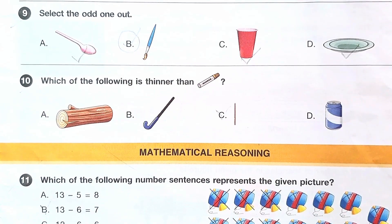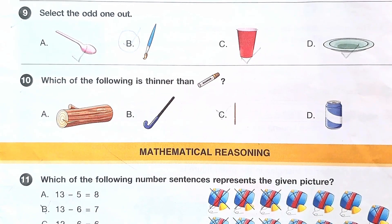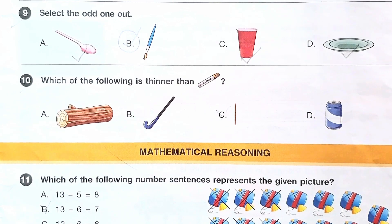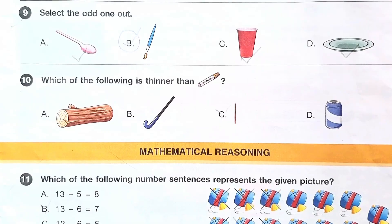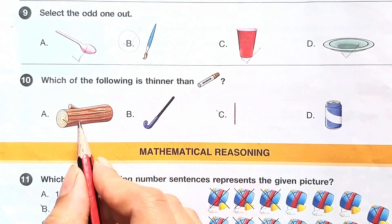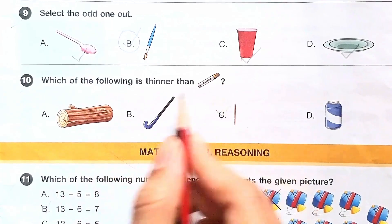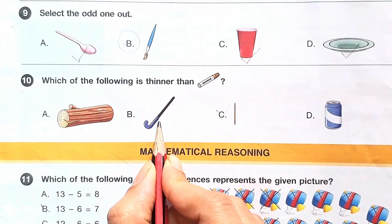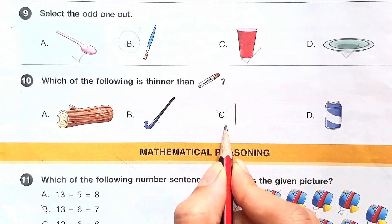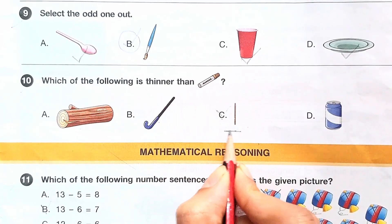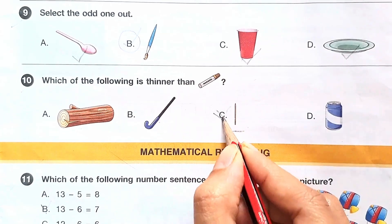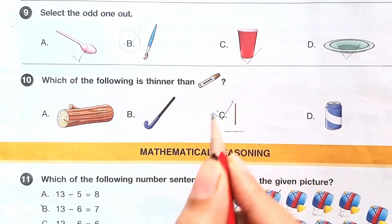Question number 10: which of the following is thinner than a crayon? Let us check the options. This one is thicker than a crayon, this one is also thicker, but this one is thinner. So the answer is option C.